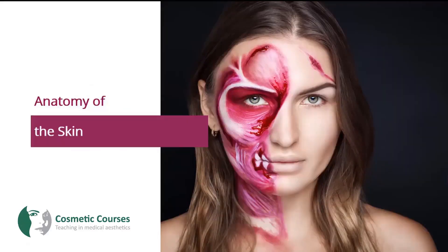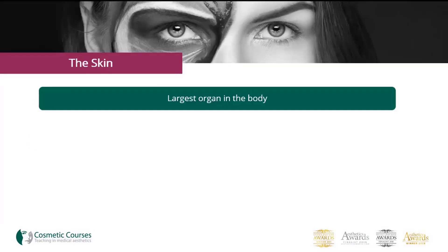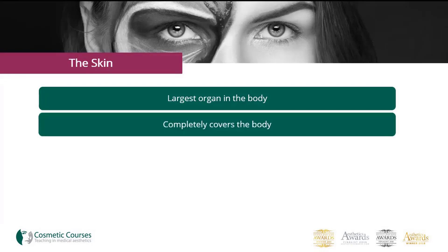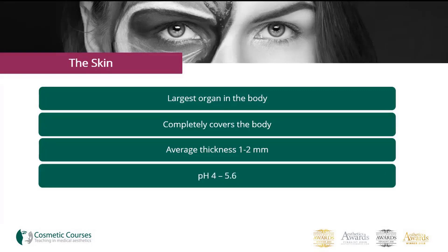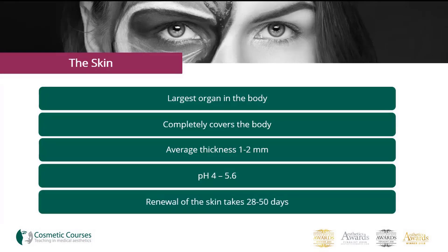Let's refresh our memories on the structure and functions of the skin. The skin is the largest organ and completely covers the body. The average thickness of the skin is 1 to 2 millimetres, although this does vary slightly depending on age and gender. The pH of the skin surface is between 4 and 5.6, making it slightly acidic, and renewal of the skin takes between 28 and 50 days.